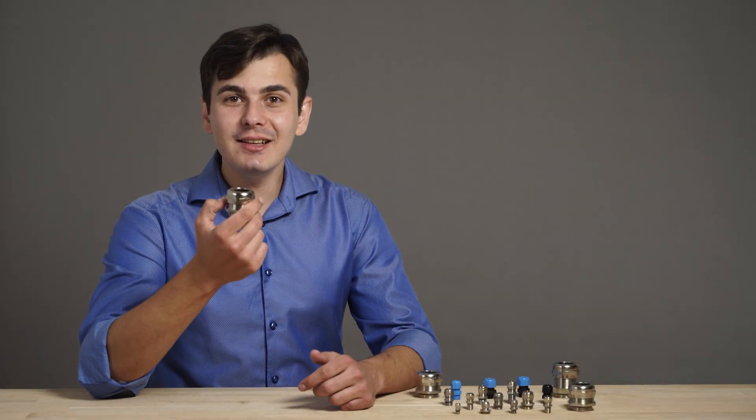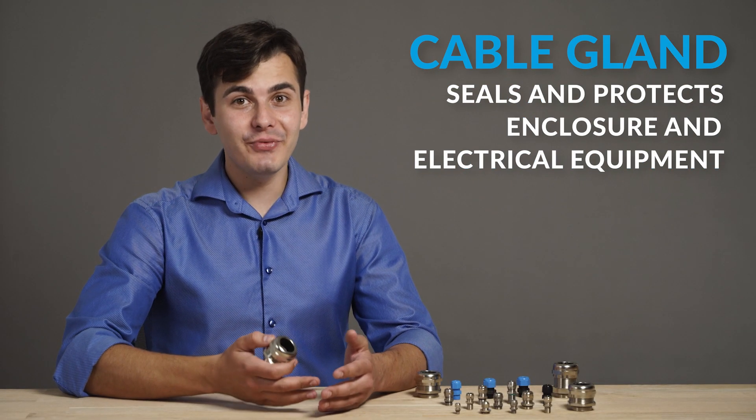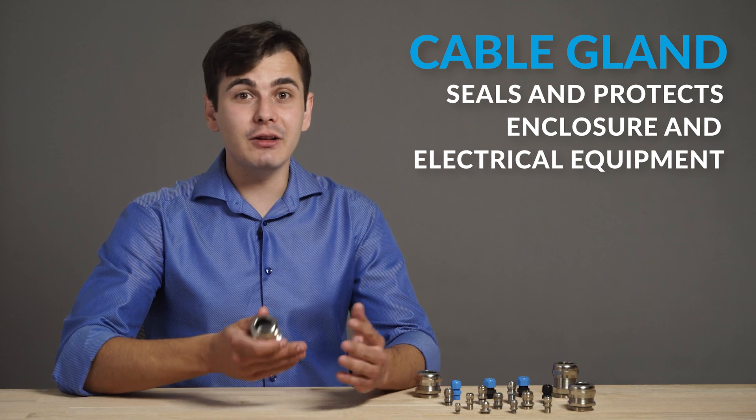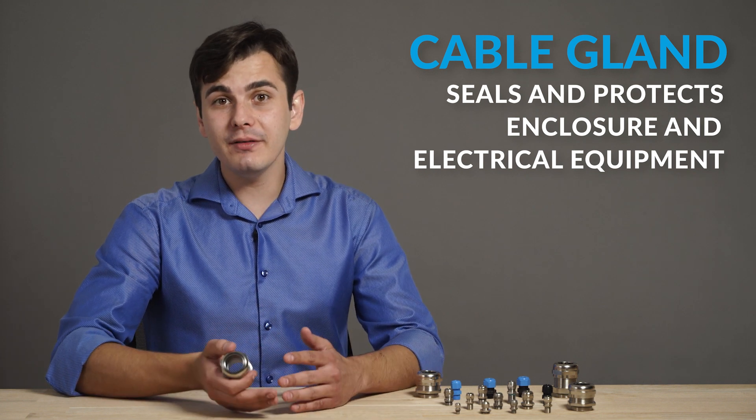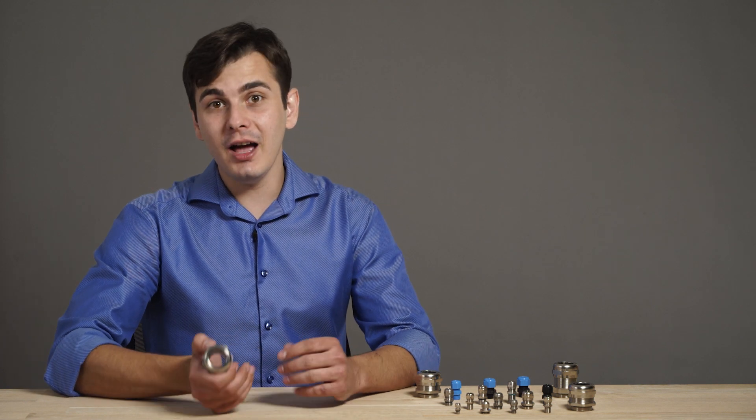A cable gland is a mechanical device that secures the end of the cable. Its purpose is to seal and protect enclosure and the electrical equipment from electromagnetic interferences, dust, water and other hazards.